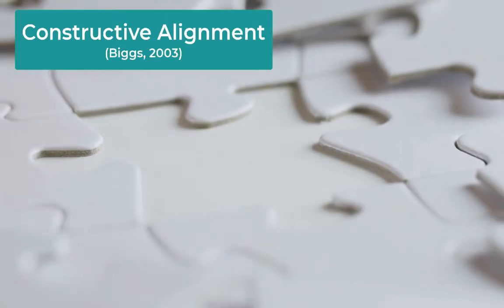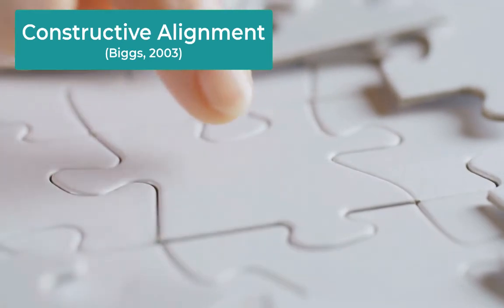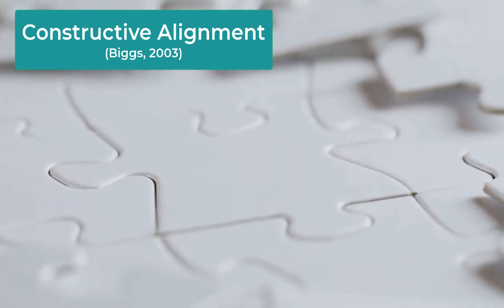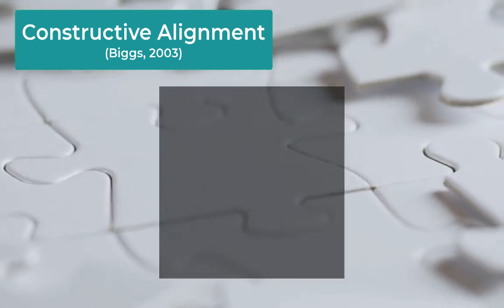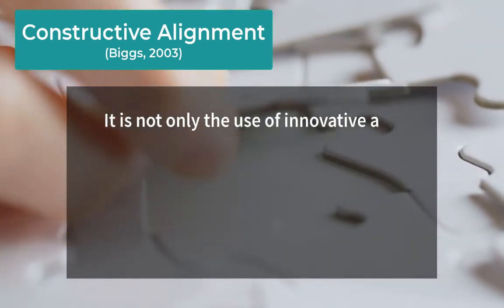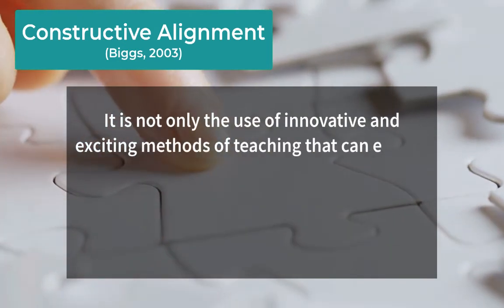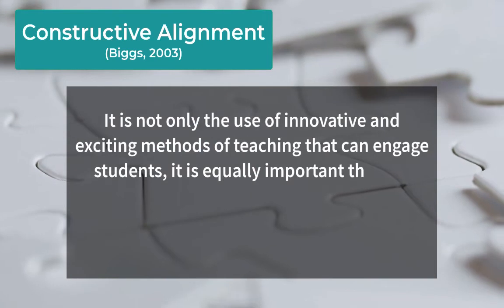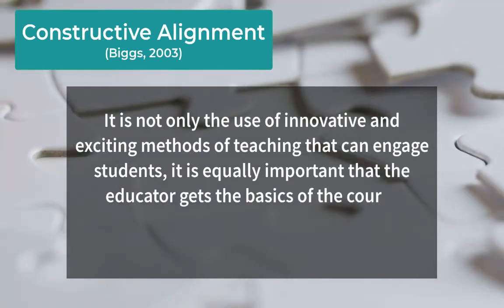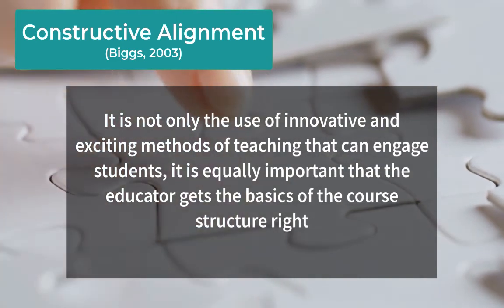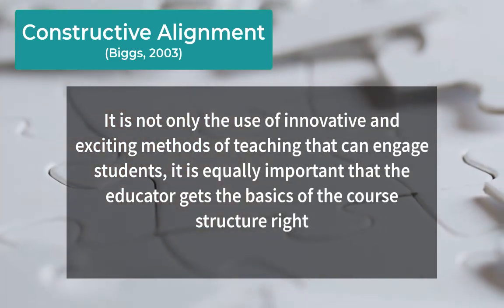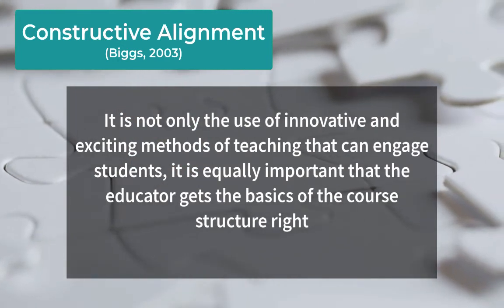Learning outcomes should also guide educators on how to design their learning activities, the teaching methods to use, and how they will assess learning — which assessment activities they will plan. Biggs advocates a concept referred to as constructive alignment as a means to enhance student engagement. He suggests that it is not only the use of innovative and exciting methods of teaching that can engage students; it is equally important that the educator gets the basics of the course structure right. Learning takes place through the active behavior of the student — it is what they do that is learned, not what the teacher does.